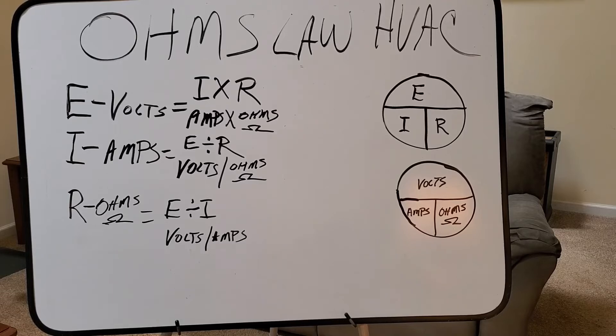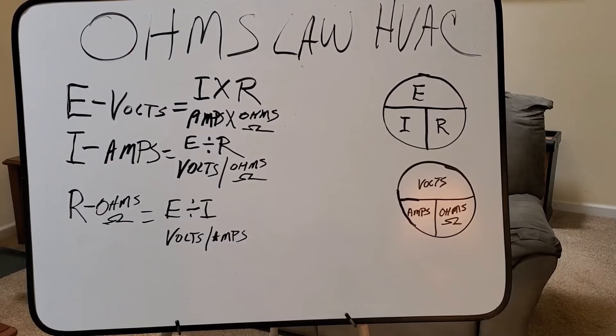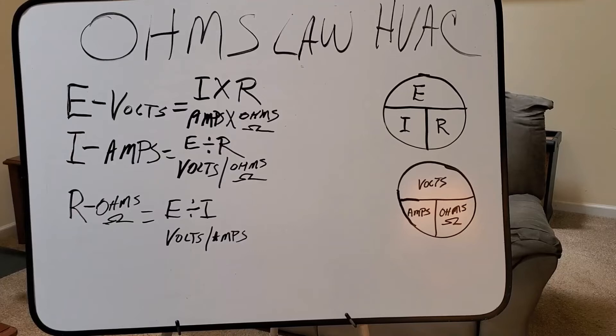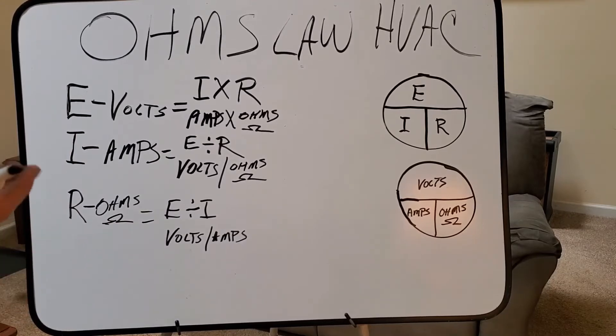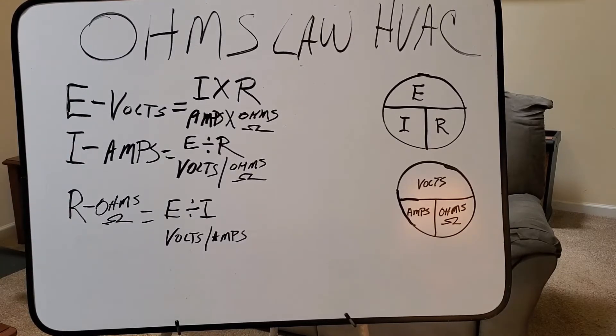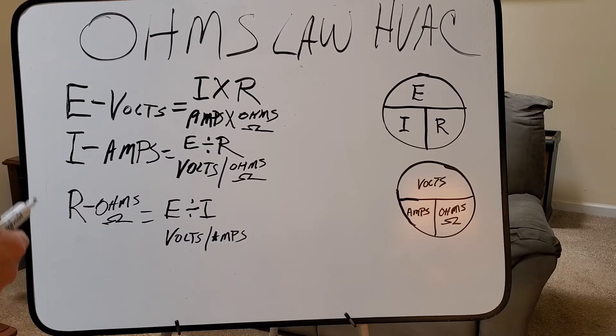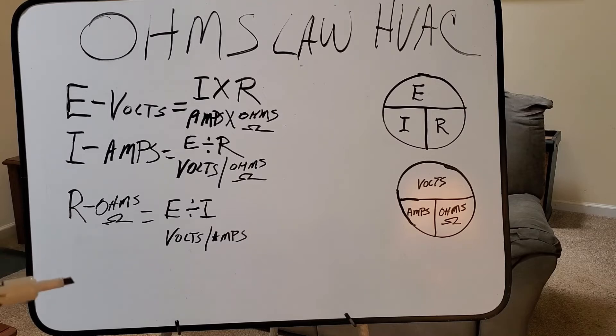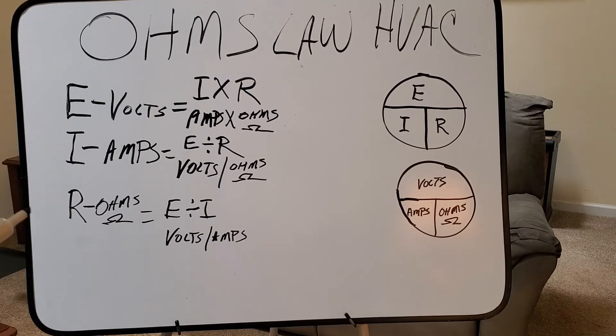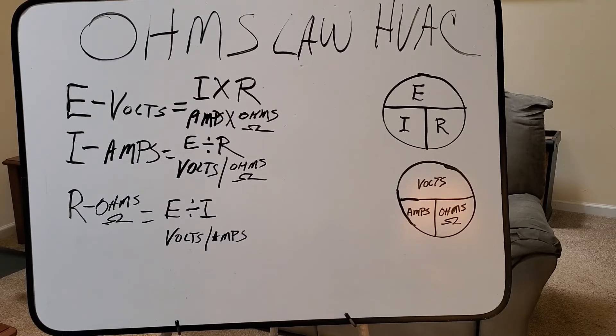In HVAC, when we're talking about volts, we're talking about volts that is feeding our units. Normally, on residential, they're 240 volt, 230 volt, 240 volt units. Normally, it'll be 208, 230. On your small commercial, it could be three phase. We could deal with 460 volt units, three phase, 120 volt units, which would be your small furnaces and that sort of thing. That's the volts that we'd be dealing with.